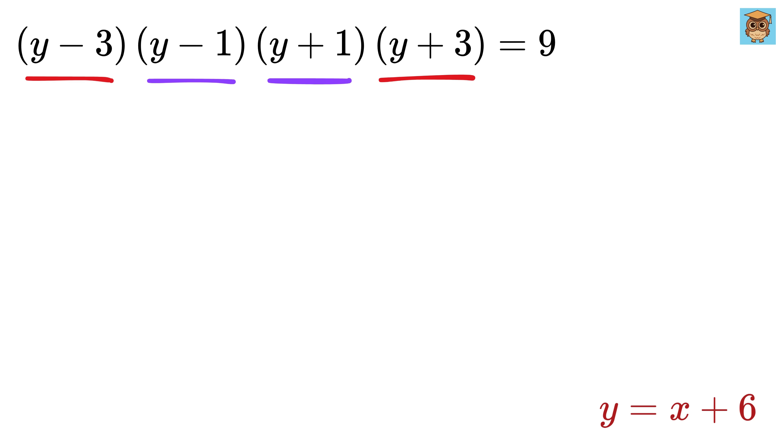Now look at these two expressions and also look at these two expressions together. Do they look familiar? Yes, both of them grouped together will be of the form a minus b times a plus b, which equals a squared minus b squared. So this becomes y squared minus 3 squared and this will become y squared minus 1 squared.